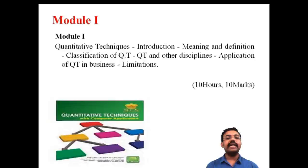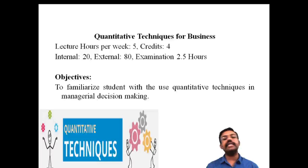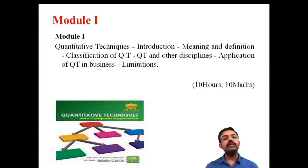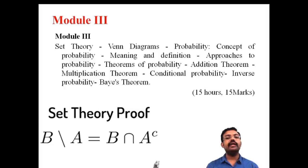To conclude: Quantitative Techniques for Business has five hours per week, four credits, 80 marks external and 20 marks internal. The main objective is to familiarize students with quantitative techniques in managerial decision making. The first module covers the introduction to QT (10 marks, 10 hours); the second covers correlation and regression (20 marks, 20 hours); and the third covers set theory and probability — including the addition theorem and Bayes' theorem — carrying 15 marks and 15 hours.